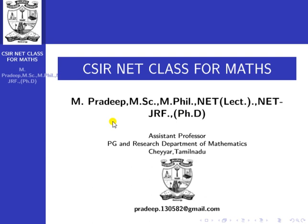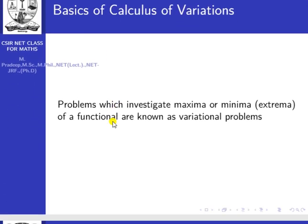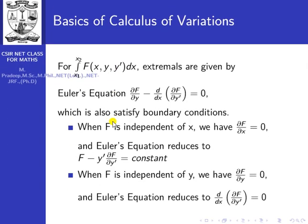The first and most important formula is the Euler equation, which plays a very important role in calculus of variation, particularly for the CSIR NET exam. The Euler equation is used to find the extremal for a given integral of the form ∫(x1 to x2) f(x, y, y') dx. The extremal means the maximum or minimum. The Euler equation is: ∂f/∂y − d/dx(∂f/∂y') = 0.